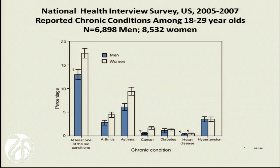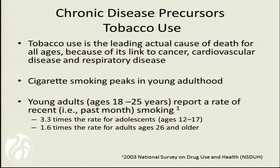The most common health conditions reported among 18 to 29-year-olds are asthma, arthritis, and hypertension, more common in men than women. When we think about prevention and precursors, tobacco is a leading cause of death for all ages because of its link to cancer, cardiovascular disease, and respiratory disease. Young adults report high smoking rates that actually exceed both adolescents and adults, per the National Survey on Drug Use and Health. There are also disparities in tobacco use by race and by education — college graduates have lower prevalence than those with a high school degree or less.